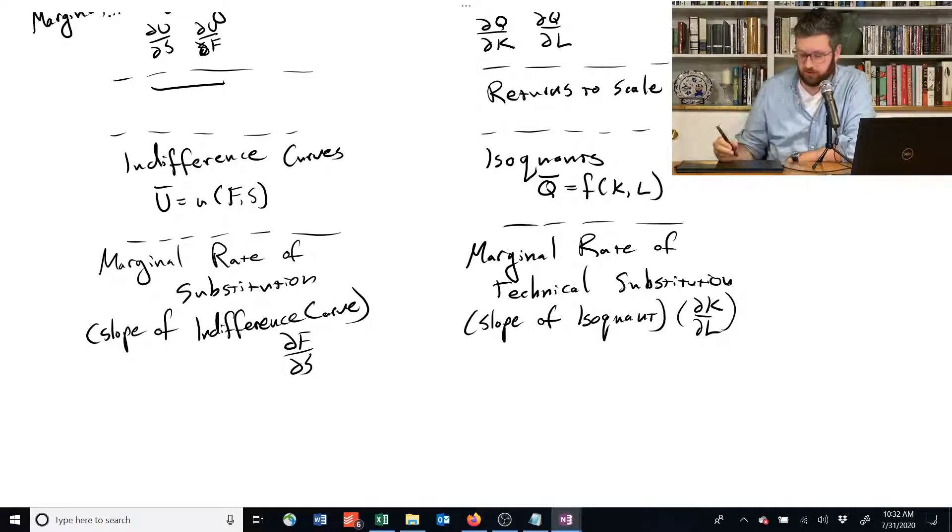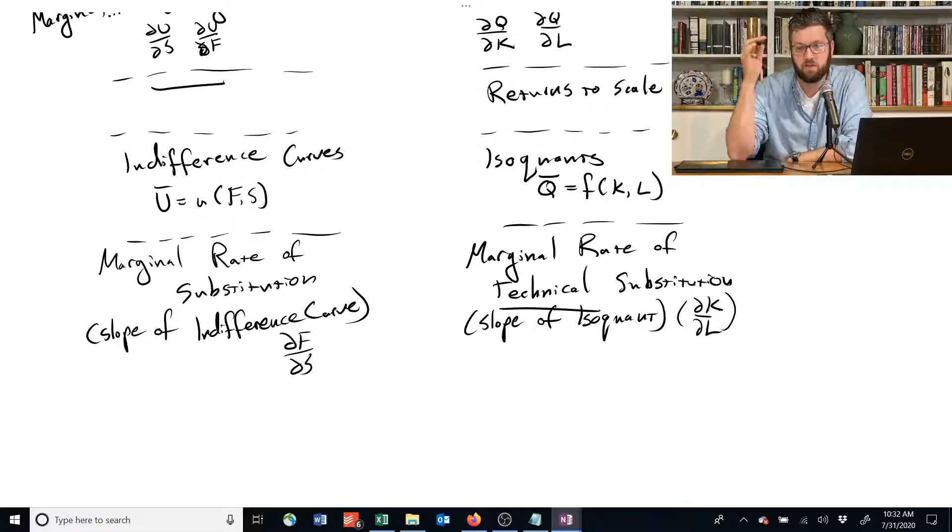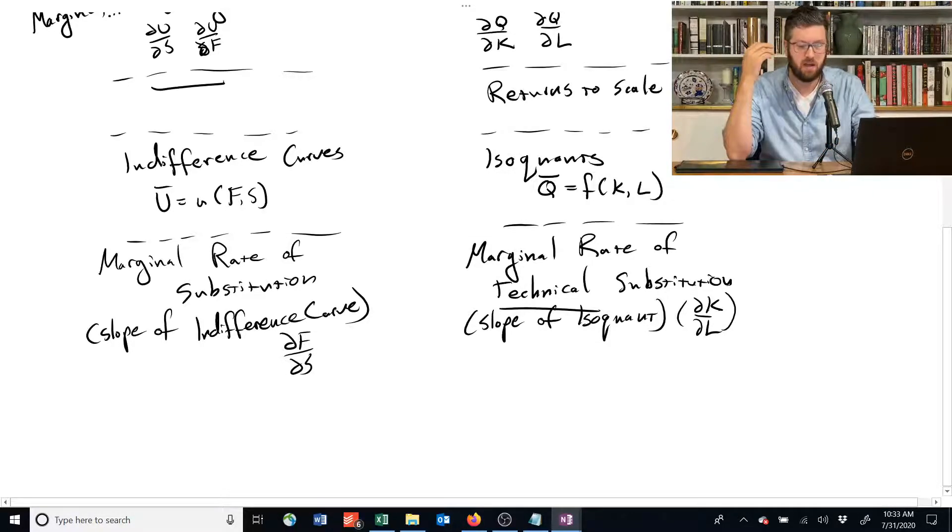And they have similar interpretations. The marginal rate of technical substitution, think technical as in technology because this is about a technology, means that if you give up a little bit of labor, how much capital do you need to maintain your same level of output? The marginal rate of substitution says if you give up a little shelter, for example, how much food do you need to maintain the same utility to be indifferent to that new bundle? So let's talk a little bit more about these guys in the next video. Thank you.